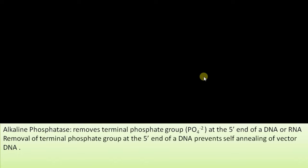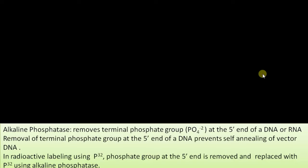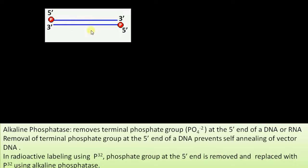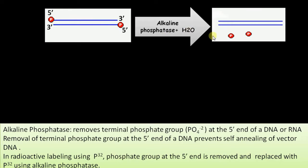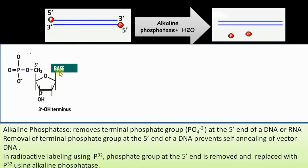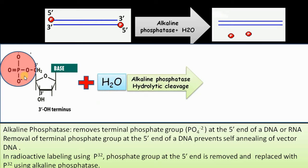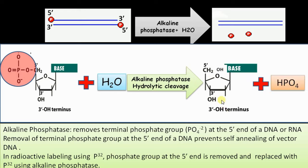Alkaline phosphatase removes terminal phosphate groups at the 5' end of DNA or RNA, helping to prevent re-annealing of vector DNA in recombinant DNA technology. It also helps in radioactive labeling using P32. In the presence of alkaline phosphatase and water, the 5' phosphate is removed by hydrolytic cleavage — this process is called dephosphorylation. The function of alkaline phosphatase is phosphate removal from the 5' end of a DNA or RNA strand.